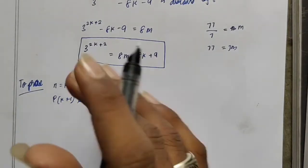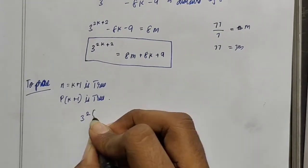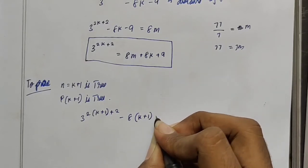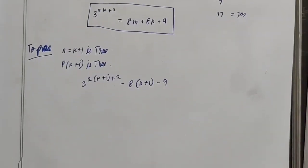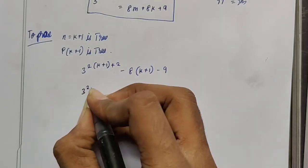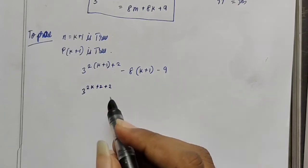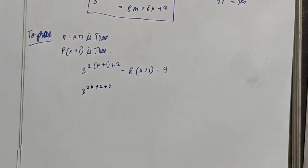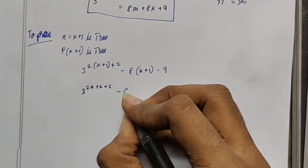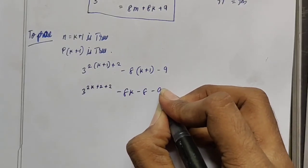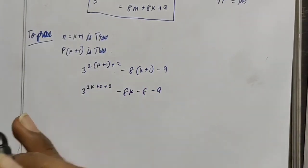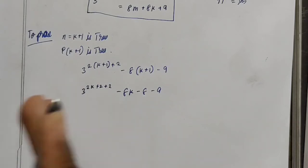We can prove it. If we substitute k plus 1, we get 3 power 2 times k plus 1 plus 2, which becomes 2k plus 2 plus 2. We then solve, and we get minus 8k minus 8.